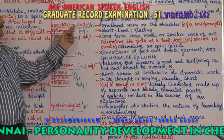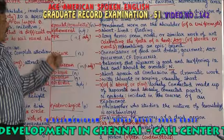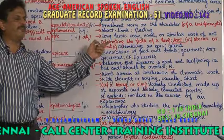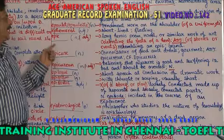Epaulette — an ornament worn on the shoulder. The ornament which is worn on the shoulder is called epaulette. Ephemeral is an adjective meaning short-lived — something which is living for a short time.